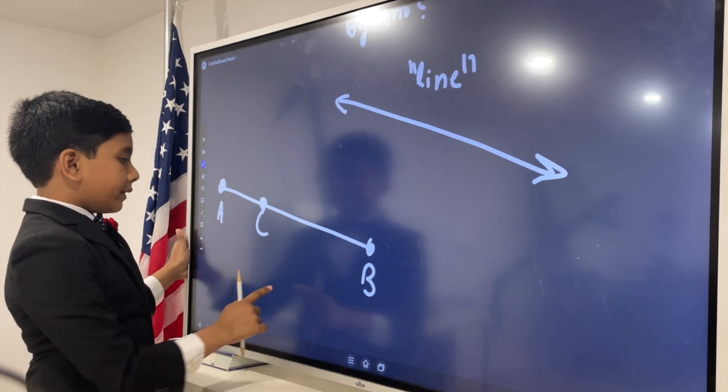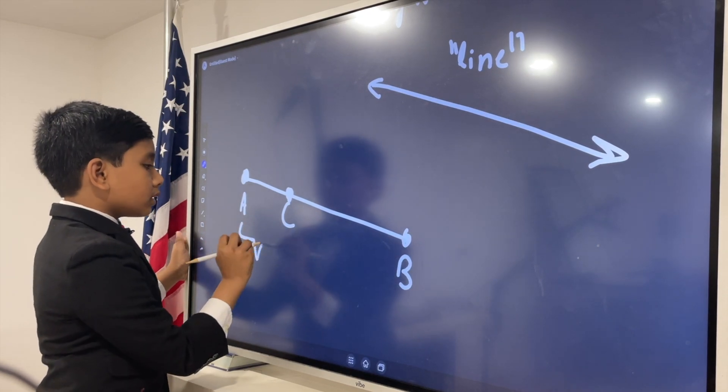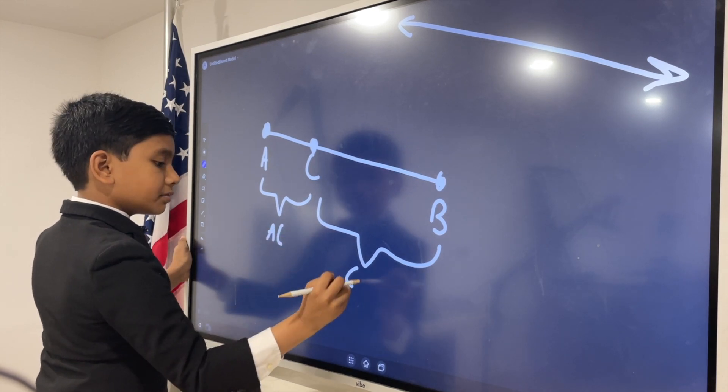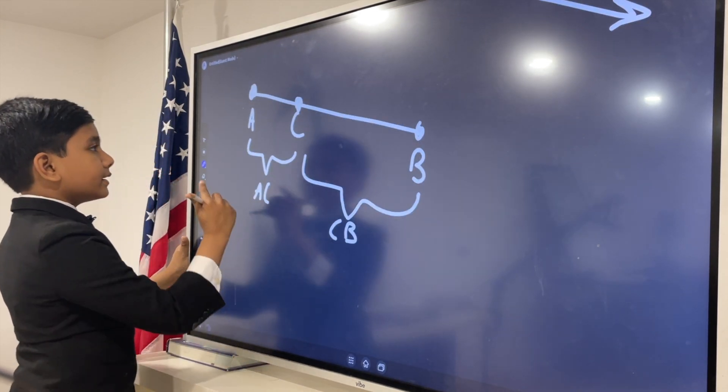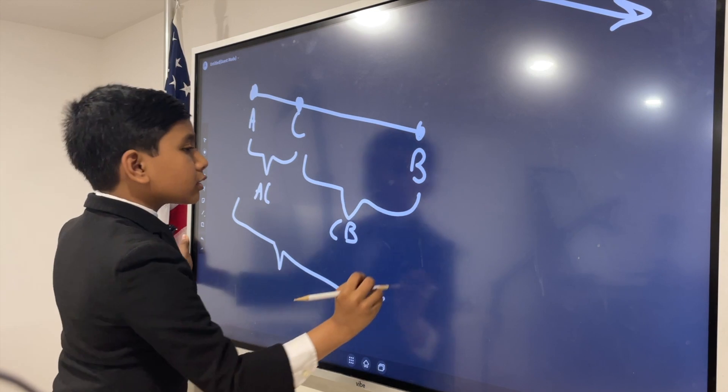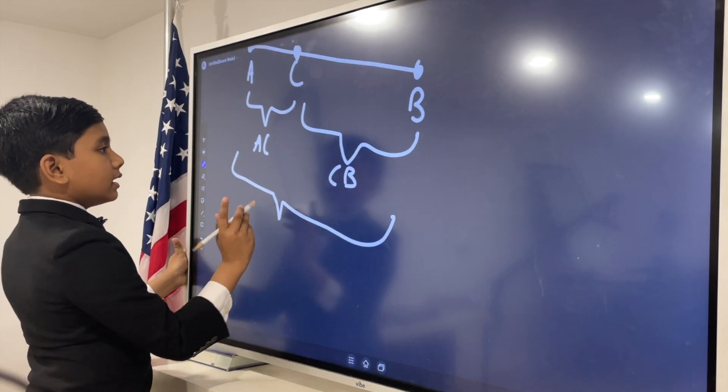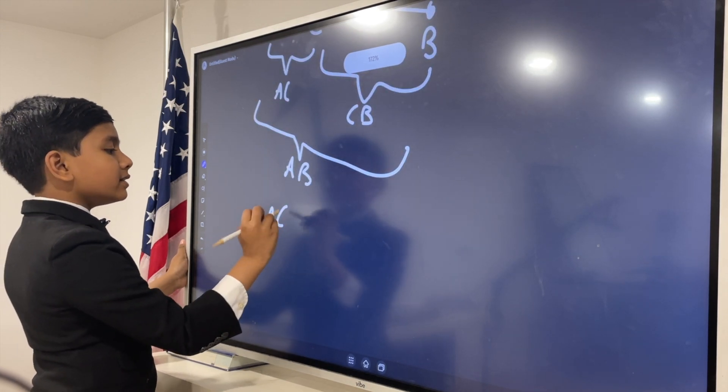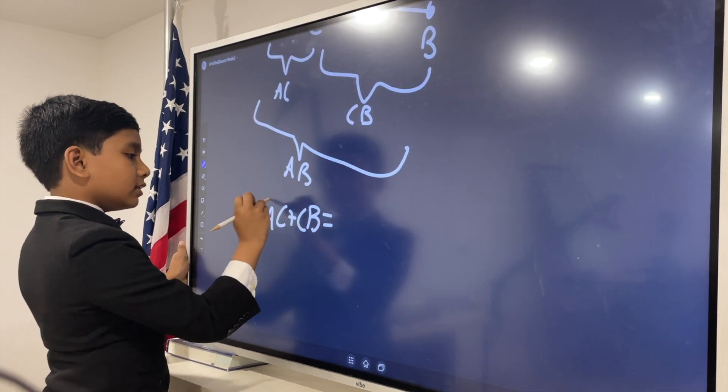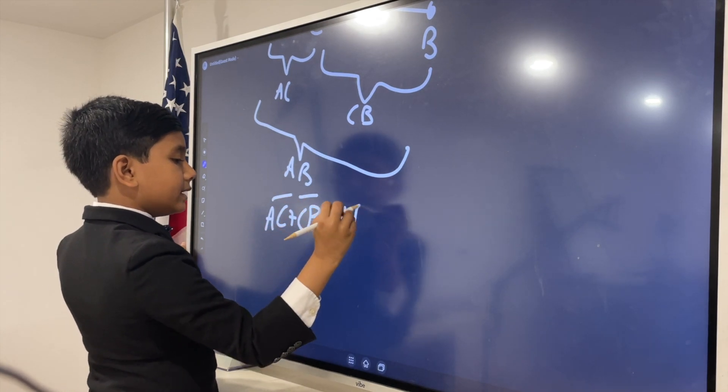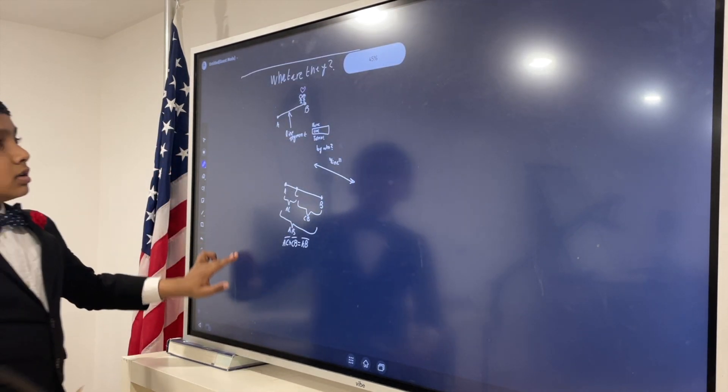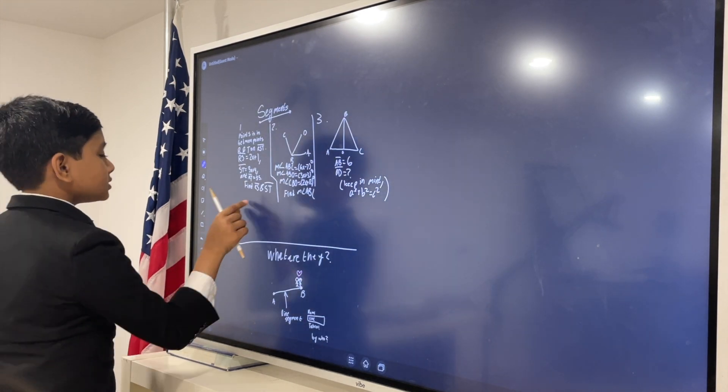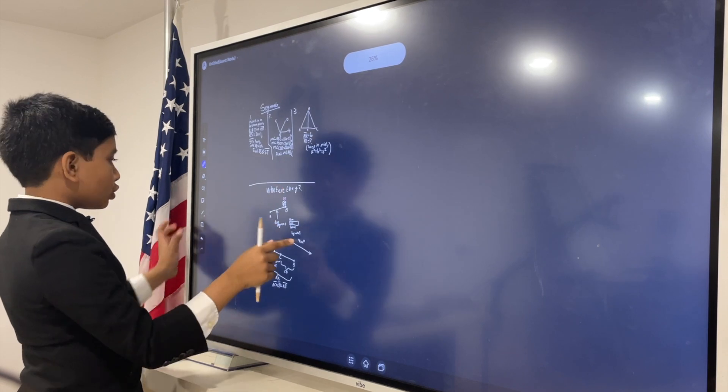Now, I can erase the dotted line, but AC and CB are still here. And this entire thing is AB. Thus, it makes sense that AC plus CB is equal to AB. So, that's a summary of line segment. Now, let's get to our questions.